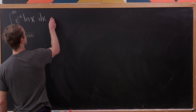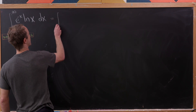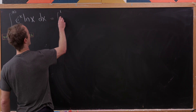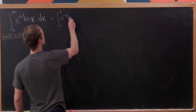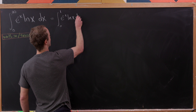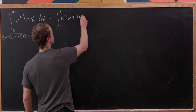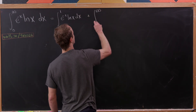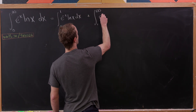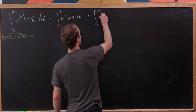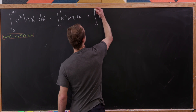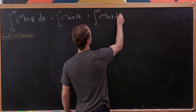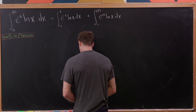We'll first split this as the integral from zero to one of e to the minus x times the natural log of x, plus the integral from one to infinity of the same integrand — e to the minus x times the natural log of x, dx.